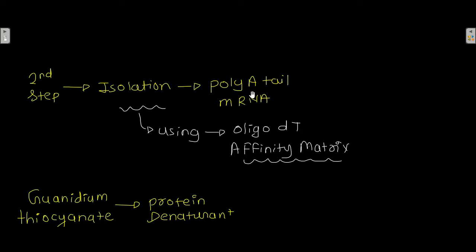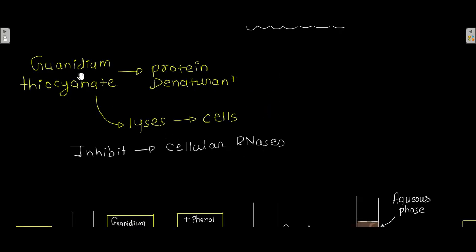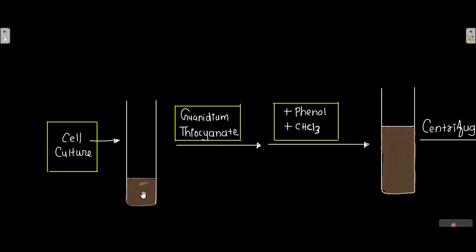Guanidinium thiocyanate is an important chemical in this process. It is a protein denaturant that causes lysis of the cell and inhibits cellular ribonucleases — the enzymes responsible for RNA degradation. You take the cell culture, add guanidinium thiocyanate, and also add phenol and chloroform to that solution.